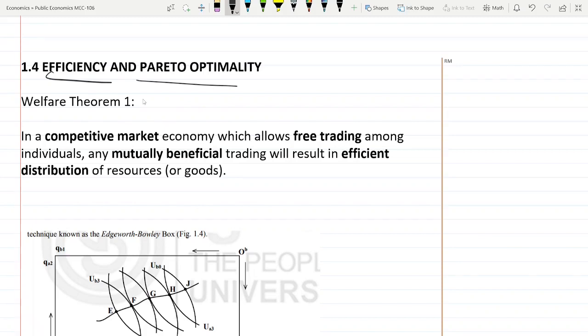Welfare theorem one says that in a competitive market economy which allows free trading among individuals, any mutually beneficial trading will result in efficient distribution of resources. So what are the assumptions this theorem is making?